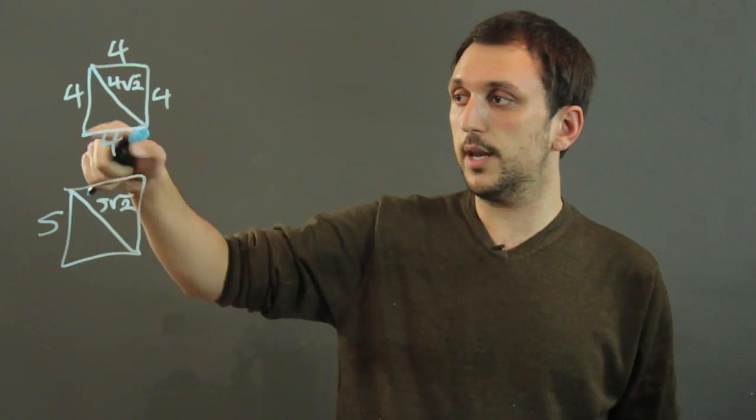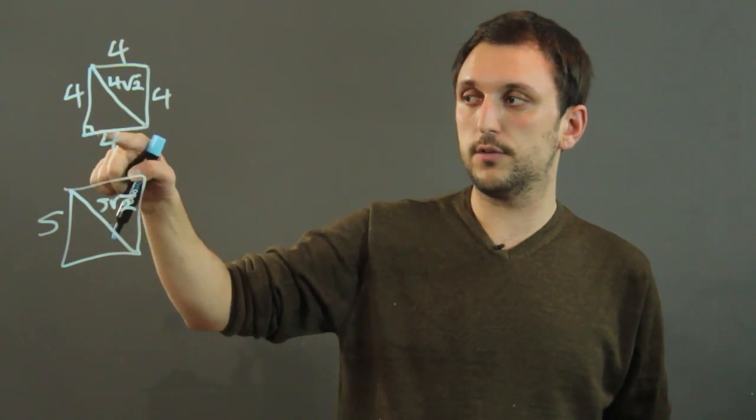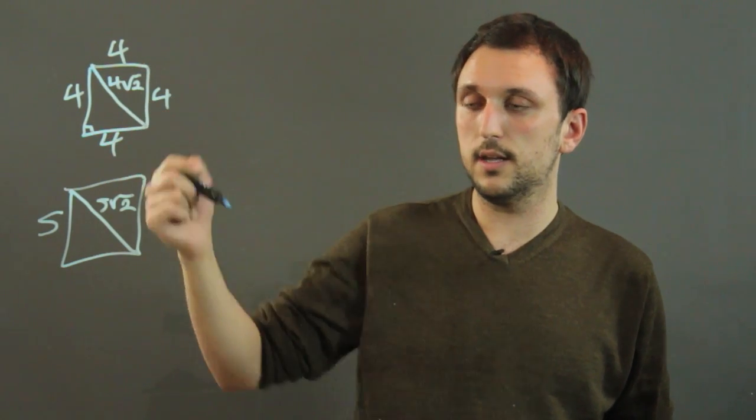The reason for that is we know that every angle inside a square is 90 degrees. This is 90, this is 90, 90, 90.